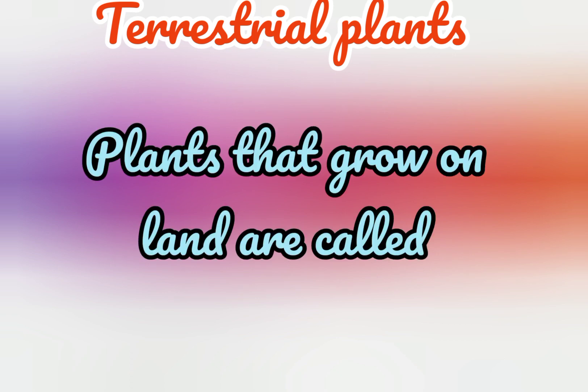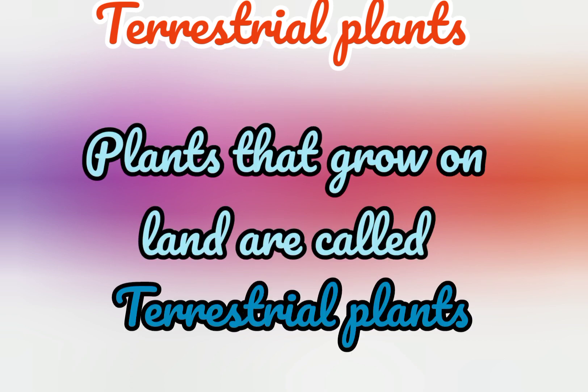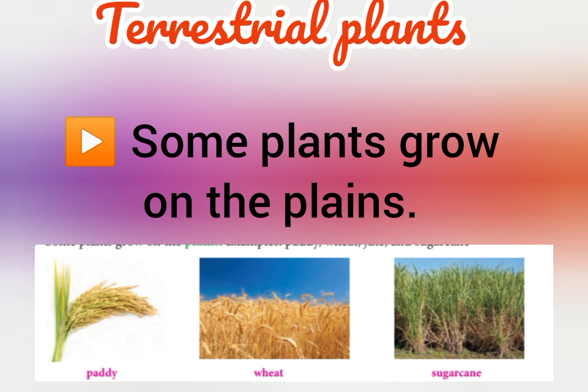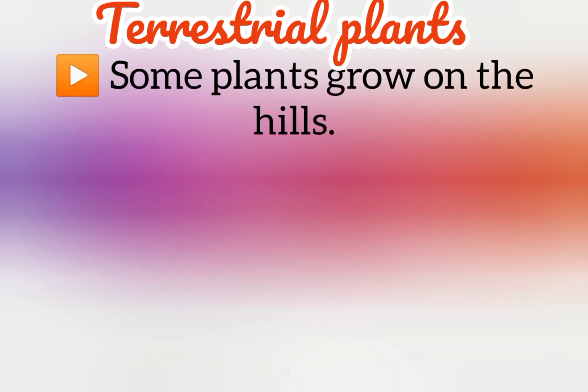Terrestrial plants — menniil valarunna sashyengalde. Plants that grow on land are called terrestrial plants. Some plants grow on the plains — for example, paddy, wheat and sugarcane.